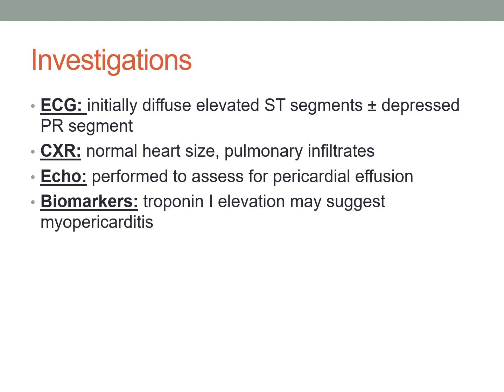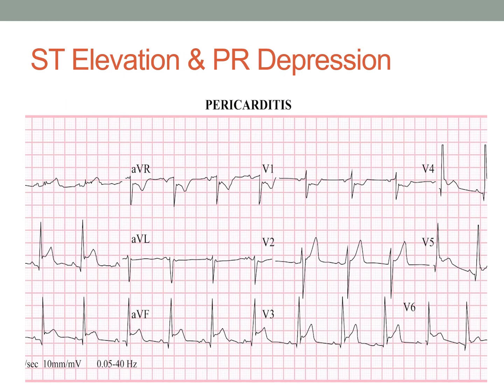Investigations: ECG initially shows diffuse ST segment elevation and PR depression. Chest X-ray shows pulmonary infiltrates. Echocardiogram is done to check for pericardial effusion. Biomarkers are only elevated when there is involvement of the myocardium. This is an ECG of pericarditis showing ST segment elevation and PR depression.